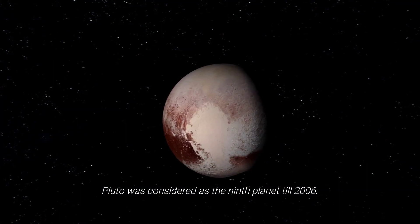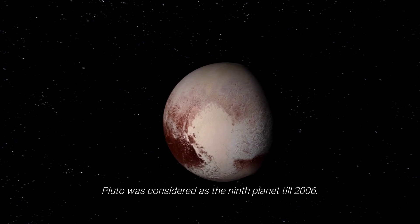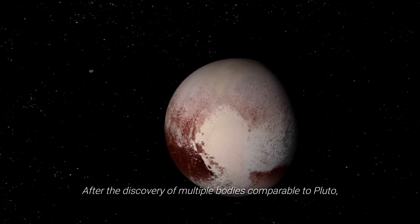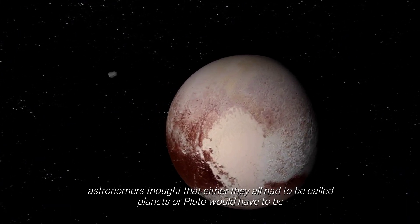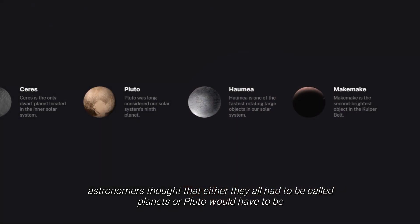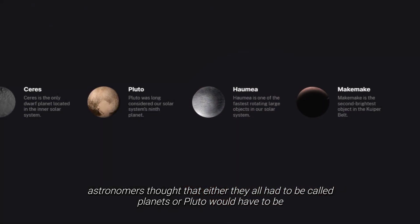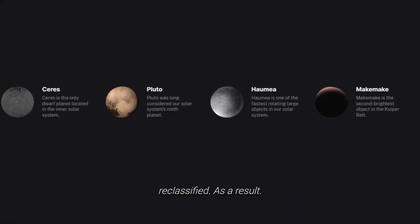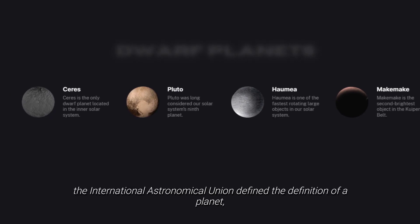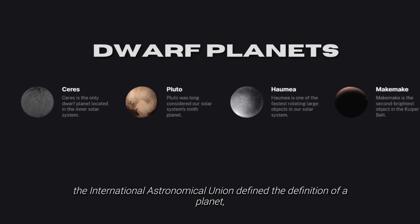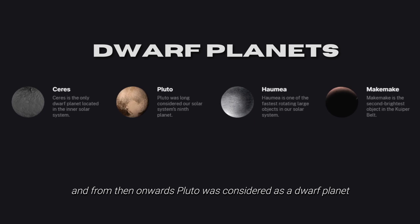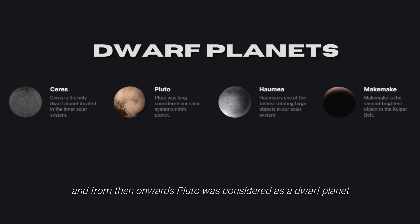Pluto was considered the ninth planet until 2006. After the discovery of multiple bodies comparable to Pluto, astronomers thought that either they all had to be called planets or Pluto would have to be reclassified. As a result, in August 2006, the International Astronomical Union defined the definition of a planet, and from then onwards Pluto was considered a dwarf planet.